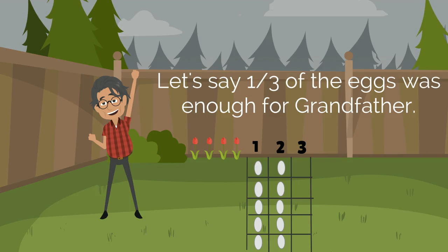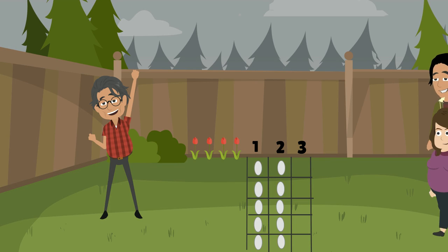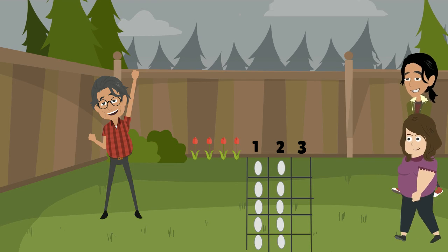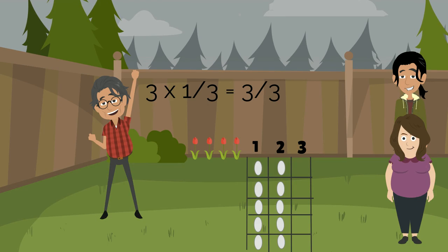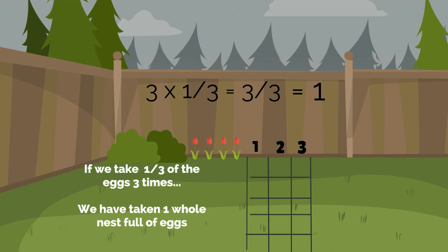Let's say 1/3 of the eggs was just enough for grandfather. But then 2 people came to visit and they were hungry too. 3 times 1/3 equals 3/3, which equals 1. We have taken 1/3 of the eggs 3 times. We have taken 1 whole nest of eggs.